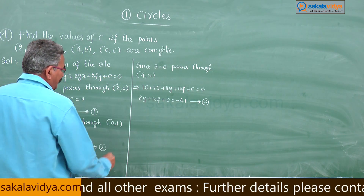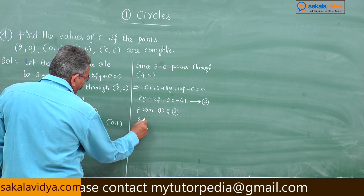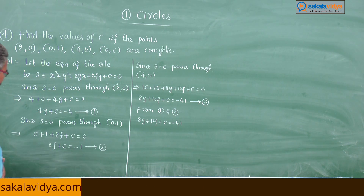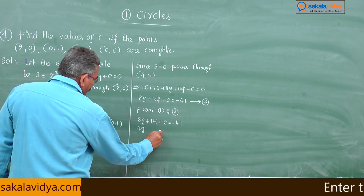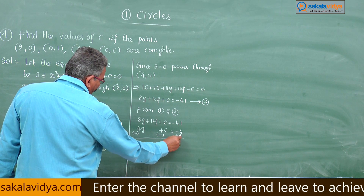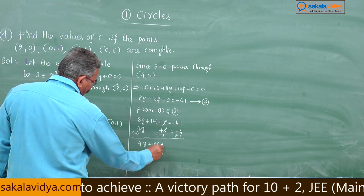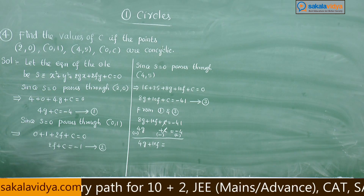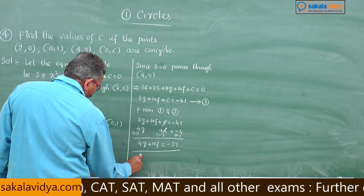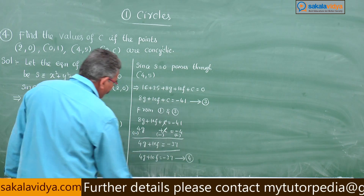From equations 1 and 3: subtracting equation 1 (4g + c = −4) from equation 3 (8g + 10f + c = −41), c cancels and we get 4g + 10f = −37. Call this equation 4.